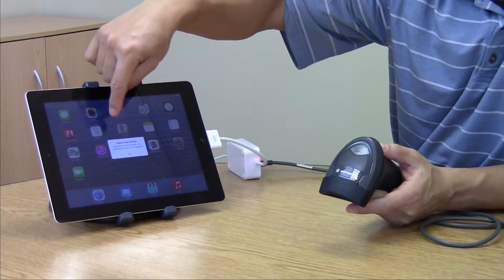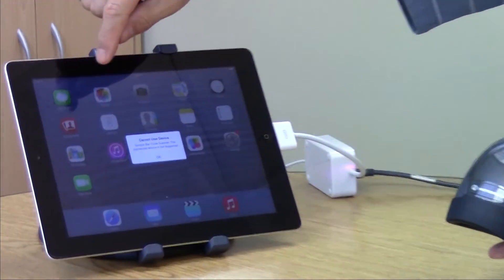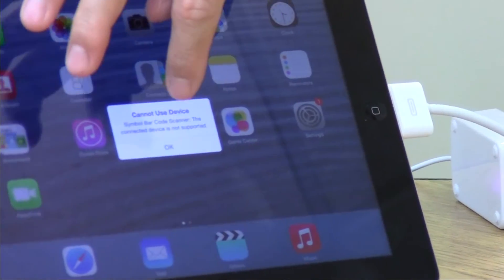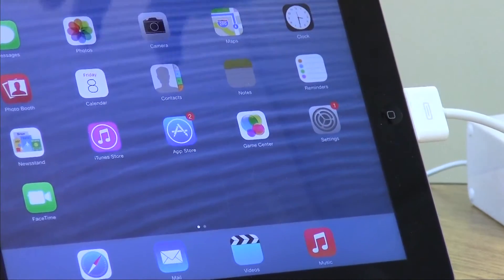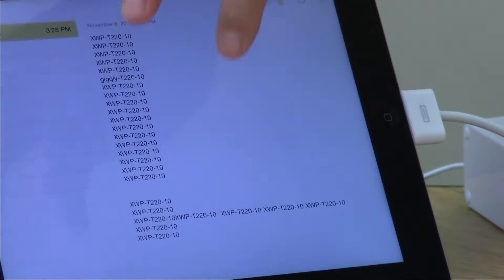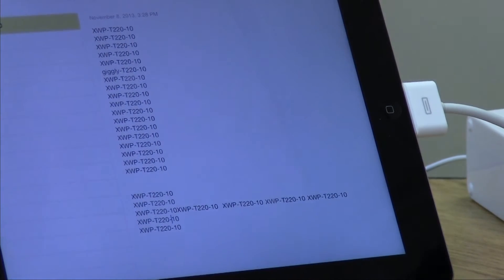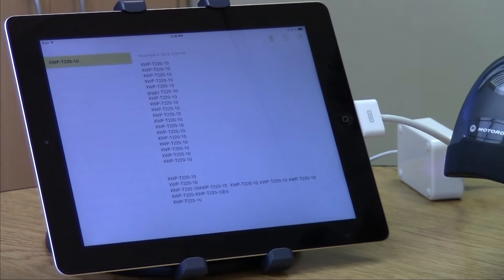On the screen, it's going to say it cannot use the device—Symbol barcode scanner not found, or it'll say Datalogic barcode scanner, whatever the manufacturer is. You just click OK, but when you go to use the device, it scans without a problem.